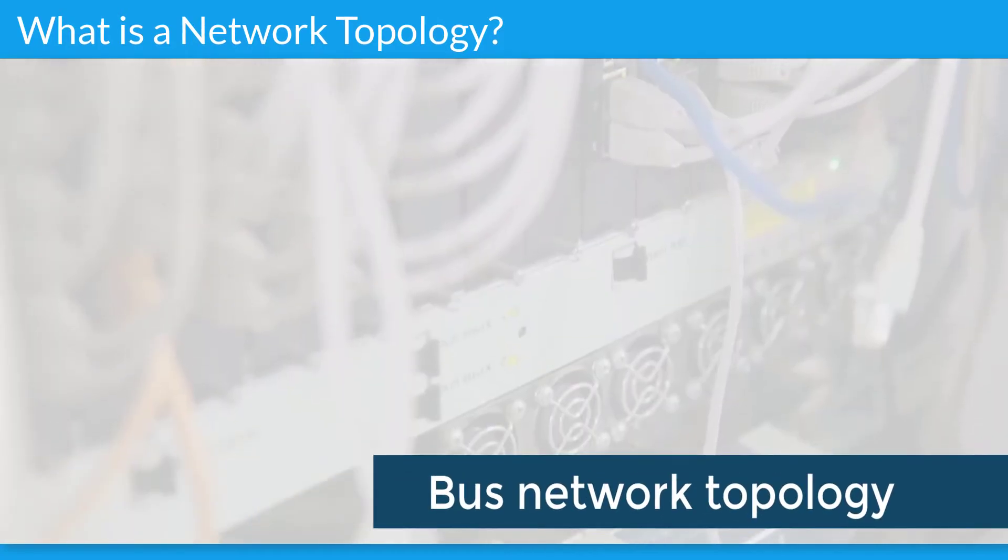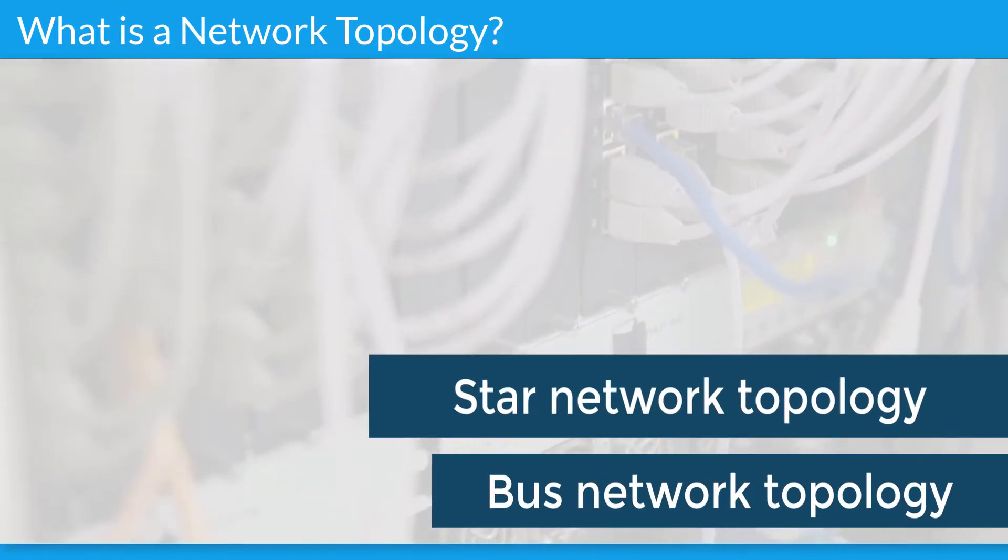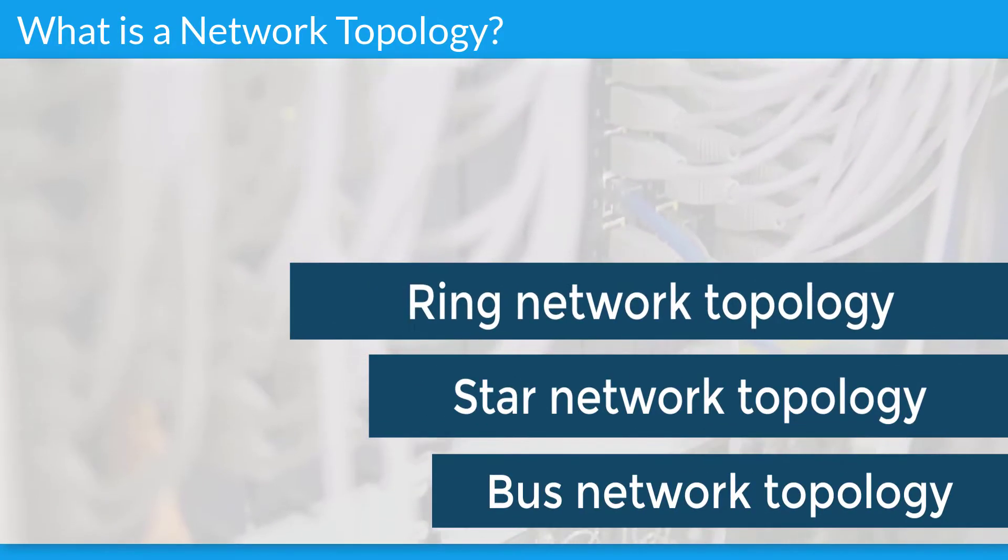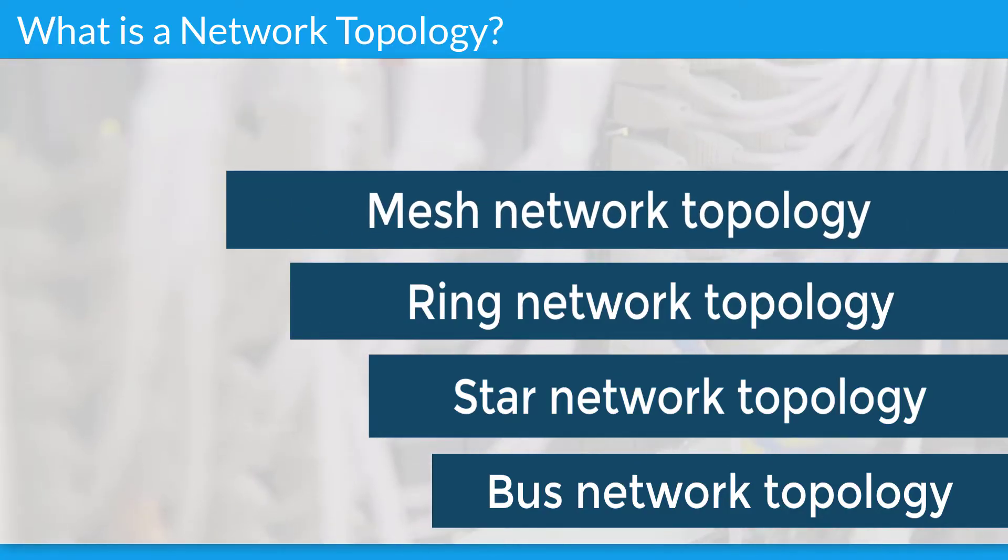The physical topology of a network is the actual geometric layout of workstations. There are several common physical topologies as described below: Bus Network, Star Network, Ring Network, Mesh Network, and Tree Network Topology.